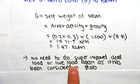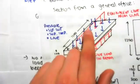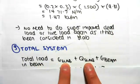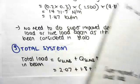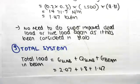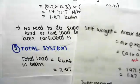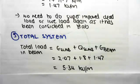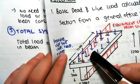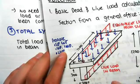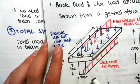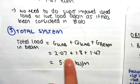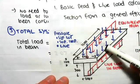There's no need to do superimposed dead load or live load again for the beam, as it has already been considered in the slab — all that load transfers from the slab into the beam. The total UDL in the beam is dead load of slab (2.07) + live load of slab (1.8) + dead load of beam (1.47), giving a total of 5.34 kilonewtons per meter. We have one total UDL through the beam from both slab and beam contributions.